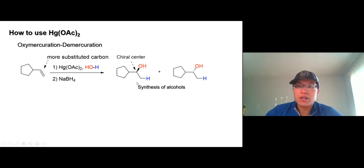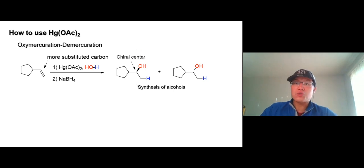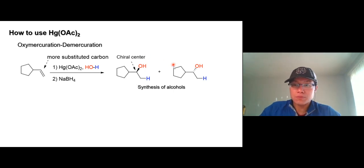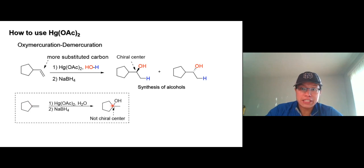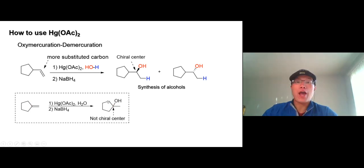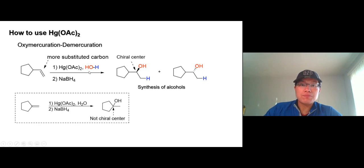Watch out — every time when you create or generate a chiral center, you're going to have a pair of enantiomers. So watch out for that. If you do this with this molecule, when you add OH on here, there's no chiral center, so you get only one product.